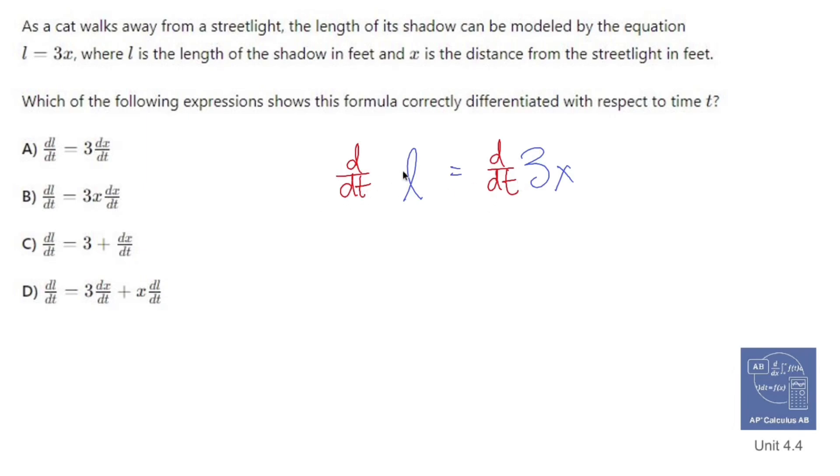When you take the derivative of L with respect to t, the derivative of L is just 1, but since we're taking the derivative of L with respect to t, we attach dL/dt. On the right side, we're going to do the same thing. The derivative of 3x is 3, but since we're taking the derivative of x with respect to t, we're going to attach dx/dt.